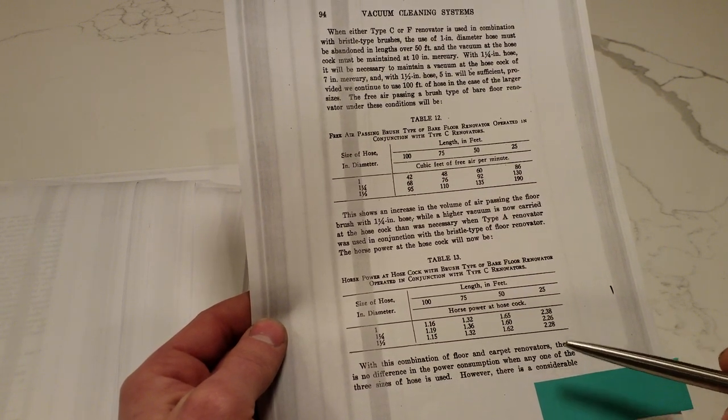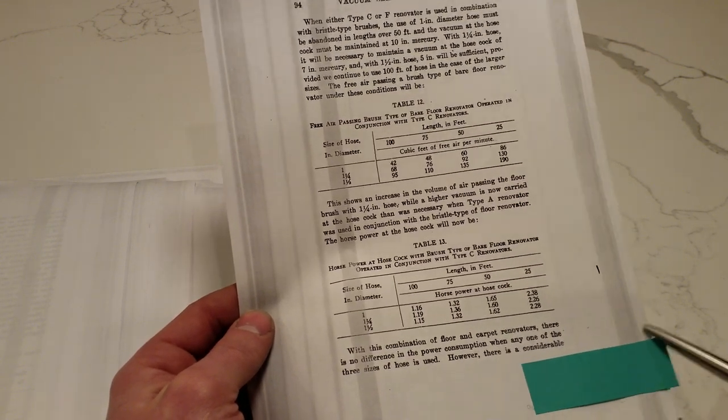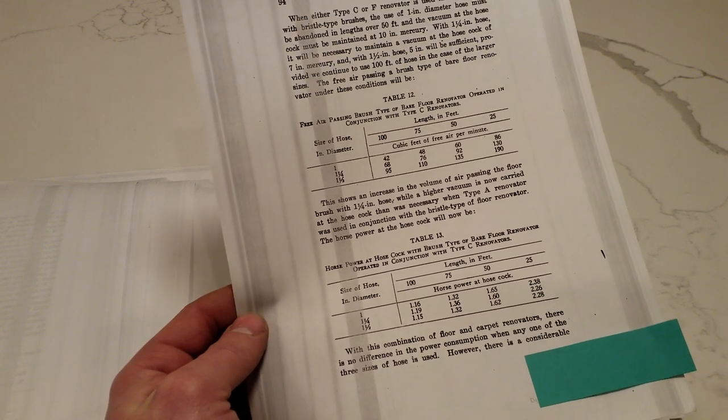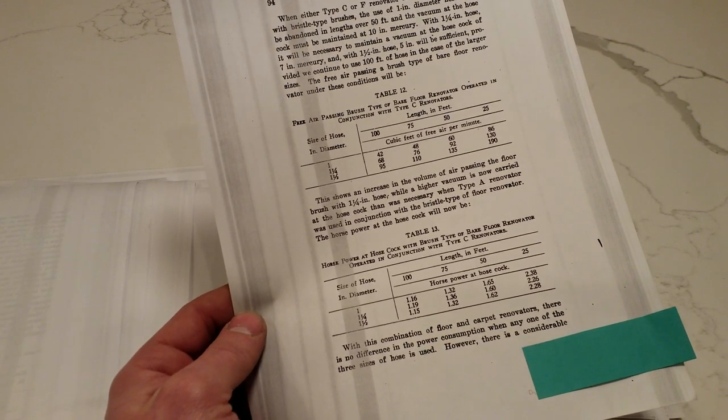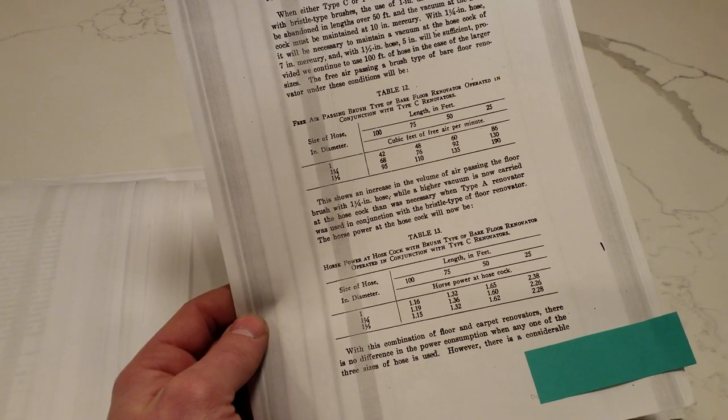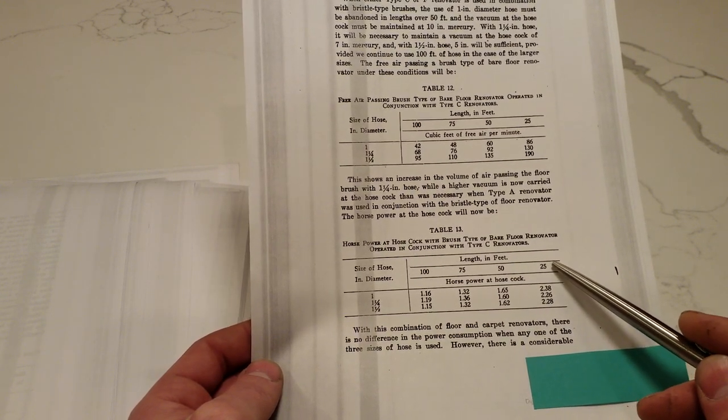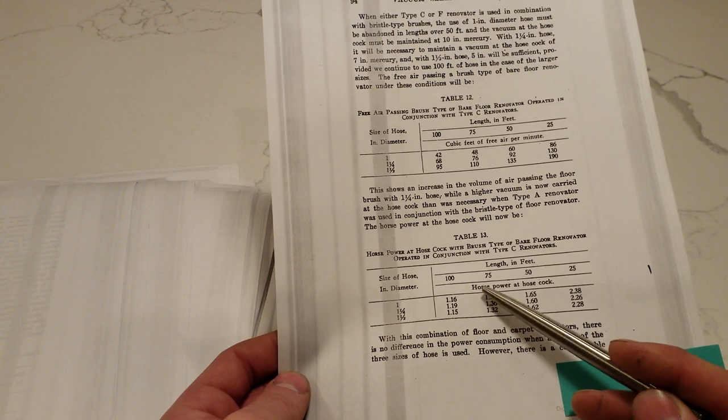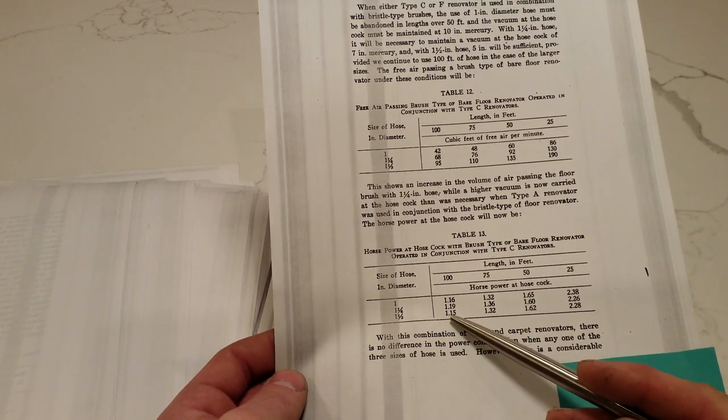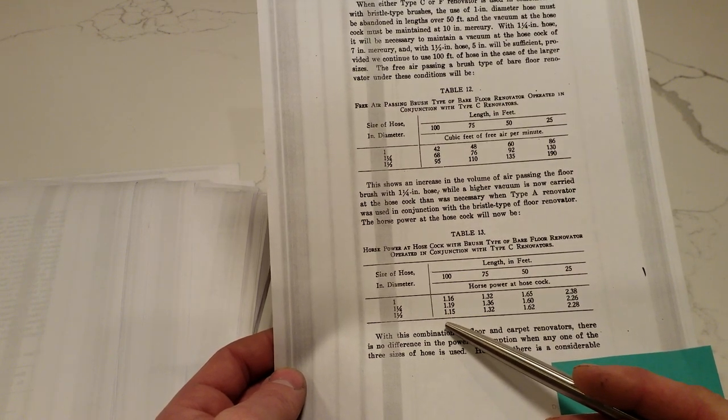Horsepower at hose cock. So, this isn't the horsepower of the motor that's running in the basement. This is the calculation of the amount of horsepower that is actually available to do work at the end of the hose. Which they refer to as the hose cock. Because a valve in those days was often called a cock. Before we all had filthy minds, I guess.